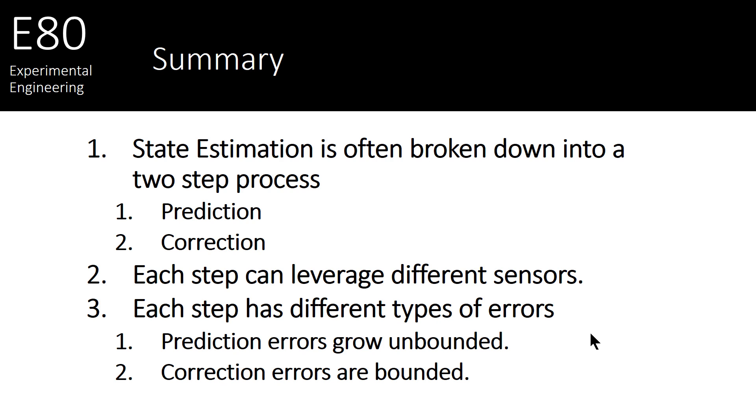And that's why we need correction. So to summarize, we talked about state estimation in this video, which is typically broken down into two steps, a prediction and correction step. Each one of these steps has different sensors it will leverage. Today we talked about the prediction sensors. And in the next video, we'll talk about some of the correction sensors. But the key thing to remember is that these predictions have errors that will grow unbounded.